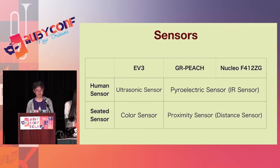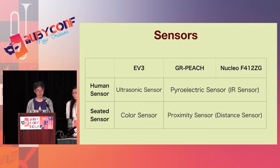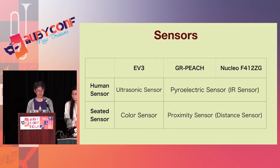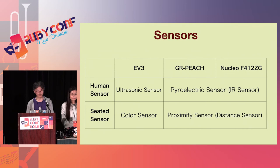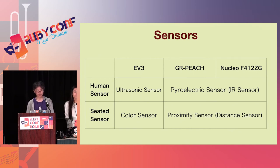The implementation of the human sensor uses different sensors between EV3 and the other boards. IR sensor and distance sensor are used for detecting humans. The IR sensor detects humans and returns true or false. The distance sensor measures distance to detected objects and has better accuracy, but is more expensive. The IR sensor is cheaper, so you can use an IR sensor for the second sensor, with reduced accuracy. In other words, you can use one IR sensor and one distance sensor, or two distance sensors.